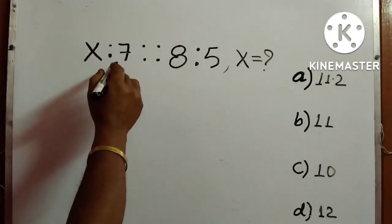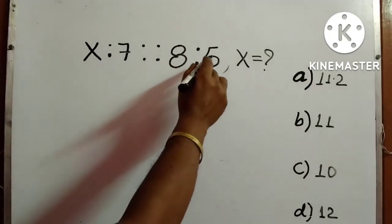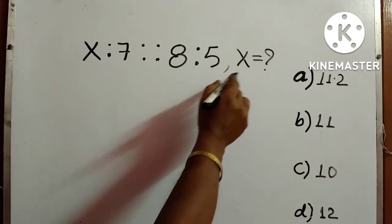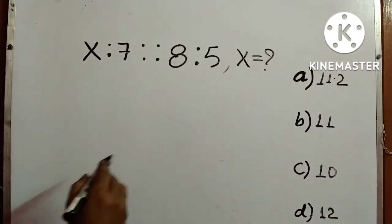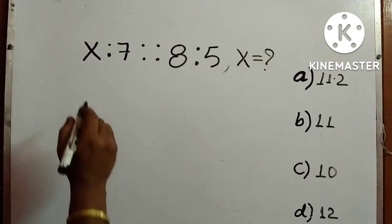In this question, x is to 7 equals 8 is to 5. We have to find the value of x, and four options are given. Before I solve, please like, share, comment, and subscribe to my channel Alpha Basics.